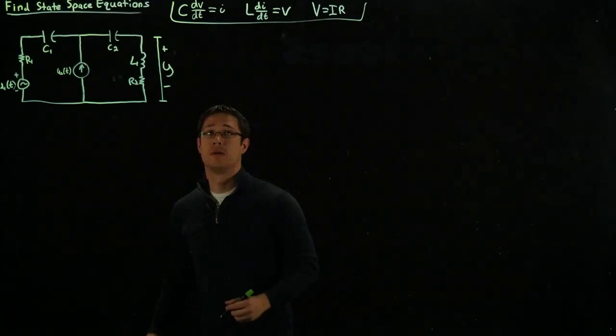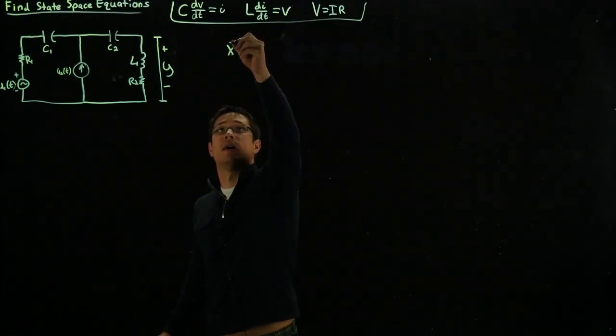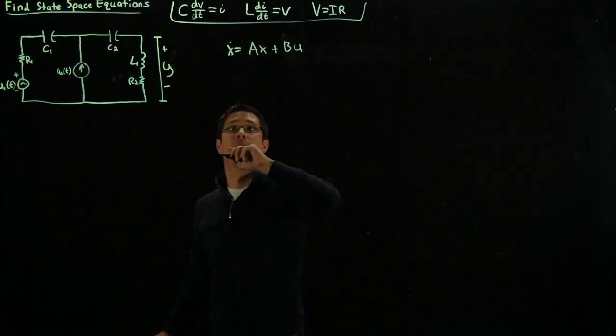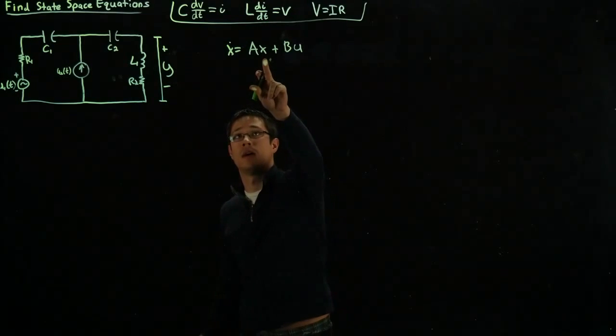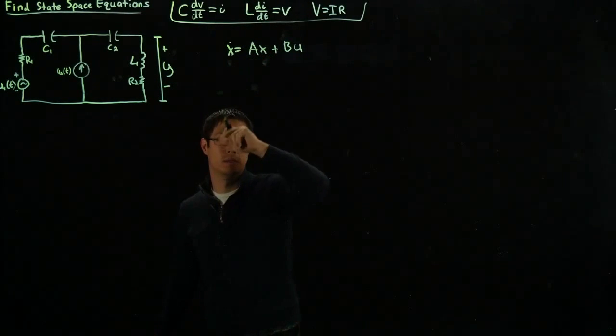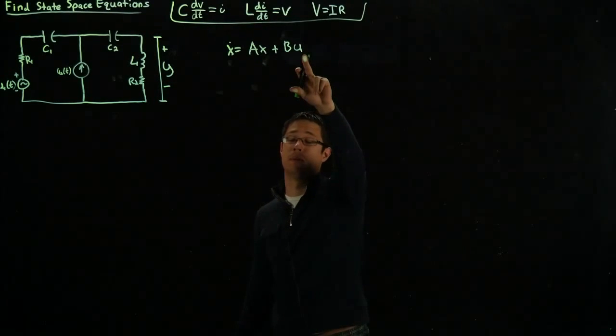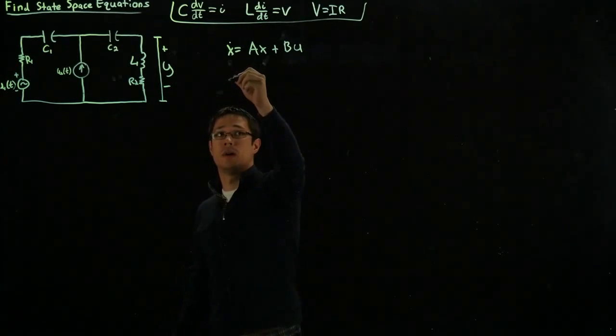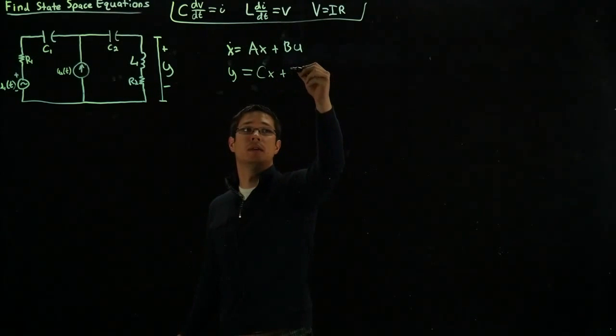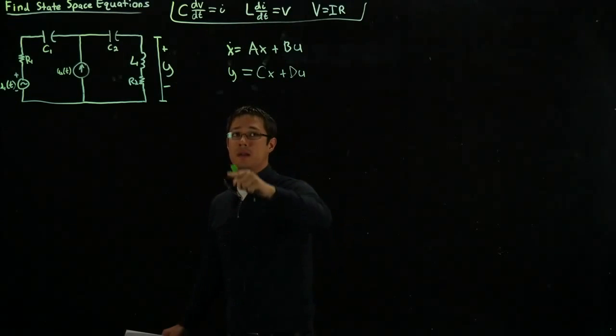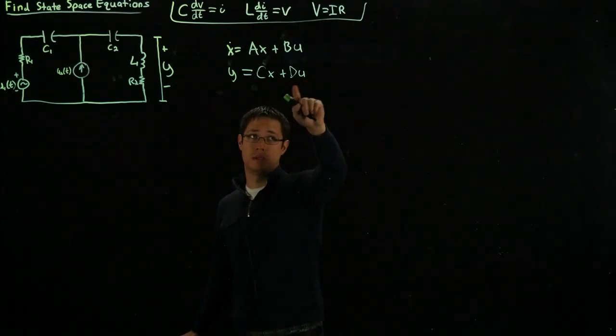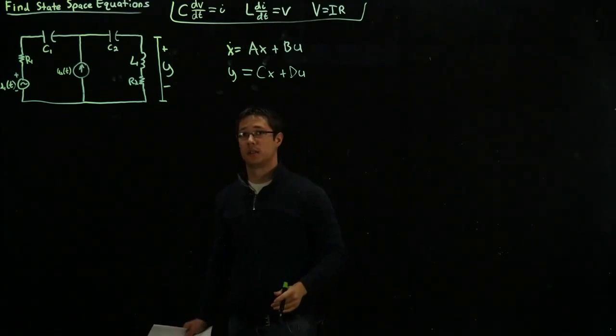More specifically, I want to write these equations: x dot equals Ax plus Bu, where x is our state vector, x dot is the derivative of those state vectors, A is a matrix, and B is another matrix paired to the input u. I also wish to write y equals Cx plus Du, which in a similar format, y is the output, C is the matrix corresponding to x, and D is a matrix corresponding to u. I will show you how to get these equations.